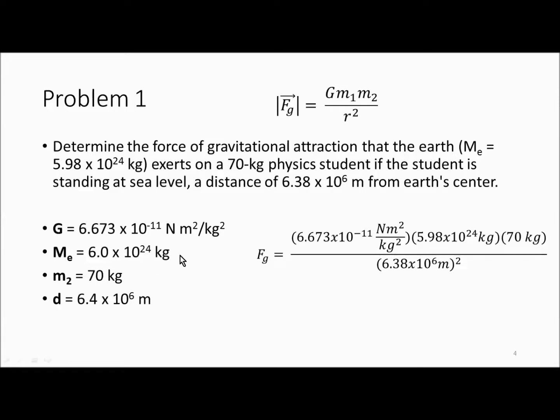So G is a constant. This is the mass 1, which is the mass of the earth. Mass 2, which is the mass of the student, divided by the radius squared. We come up with 686 newtons.